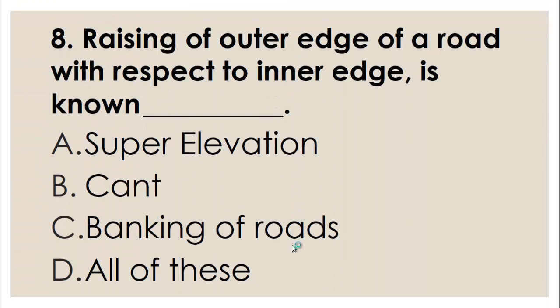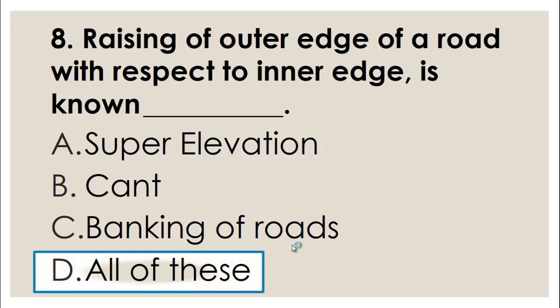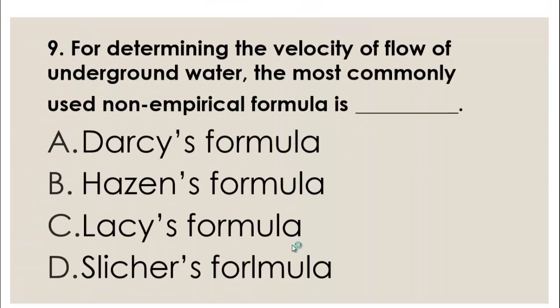MCQ number eight: The raising of the outer edge of a road with respect to the inner edge is known as — A) Super elevation, B) Cant, C) Banking of roads, D) All of these. These three are names for the same thing, so the right choice is D, all of these — the raising of the outer edge of the road with respect to the inner edge is known as super elevation, cant, or banking of roads.